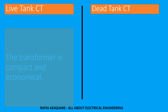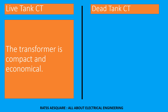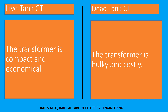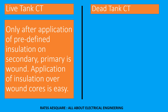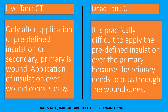The live tank transformer is compact and economical, while the dead tank transformer is bulky and costly. In live tank CT, only after application of predefined insulation on the secondary is the primary wound, and application of insulation over wound cores is easy. In dead tank CT, it is practically difficult to apply the predefined insulation over the primary because the primary needs to pass through the wound cores.